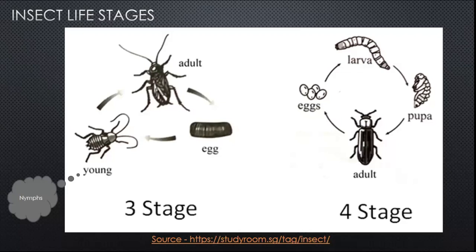Imagine you stayed during lockdown, grew a bit, and no longer fit in an Iron Man suit you bought a year ago. For us humans, we just go ahead and buy a new suit. But for insects, what they need to do is literally crawl out of their older shell, which is too small for their future self to fit. That process is called molting — I'll show that in the coming slides.